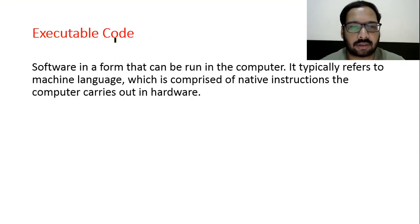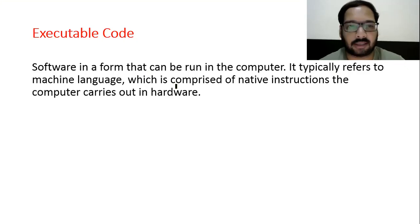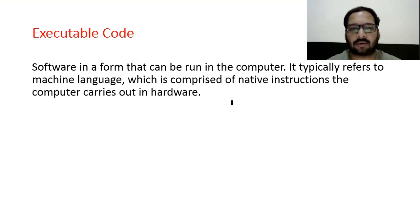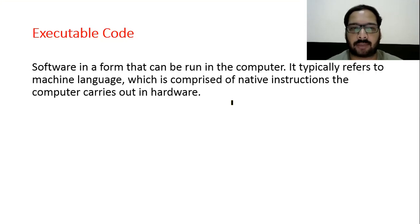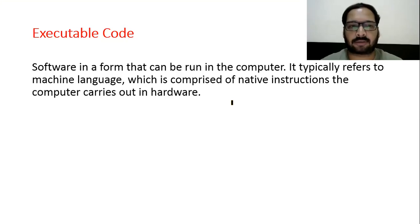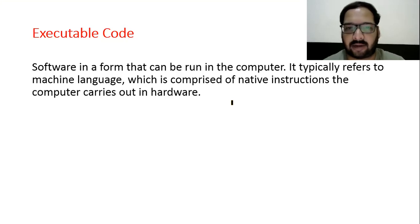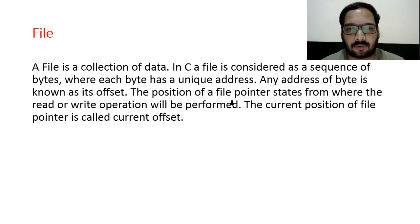Executable code: software in a form that can be run on the computer. It typically refers to machine language comprised of native instructions the computer carries out in hardware. Code that you can execute — when we run a program, it first compiles, then we click execute. When it compiles, a binary file (object code) is created, which is further converted into executable code that finally runs.